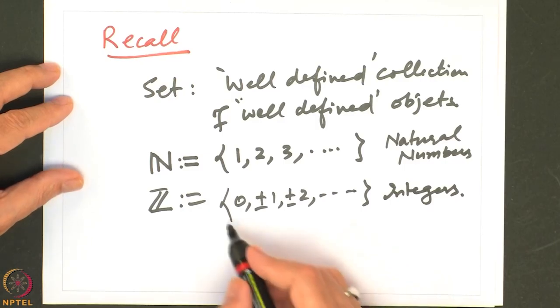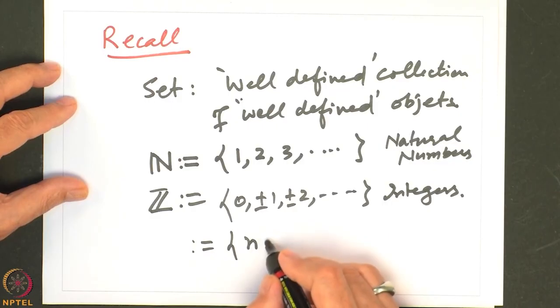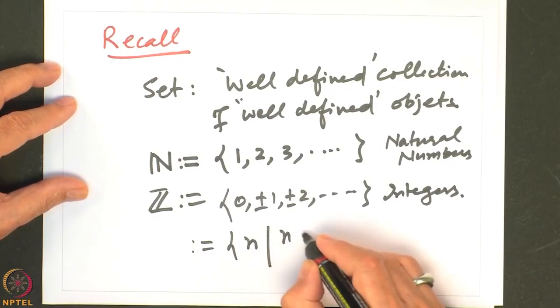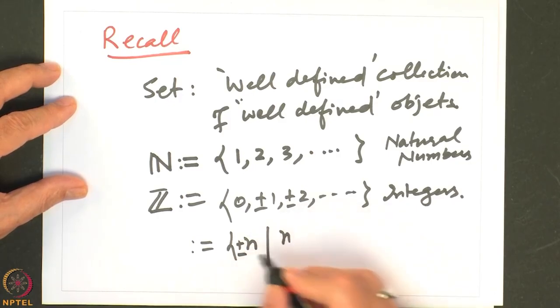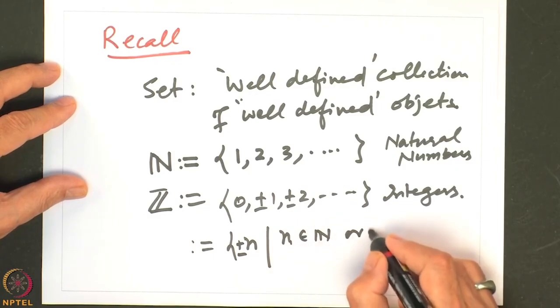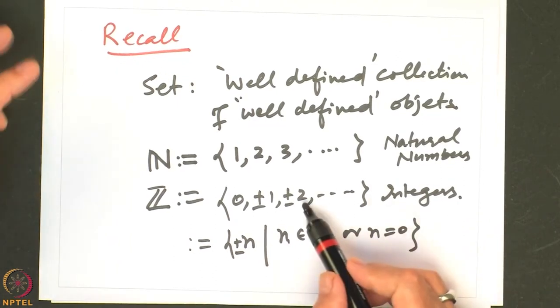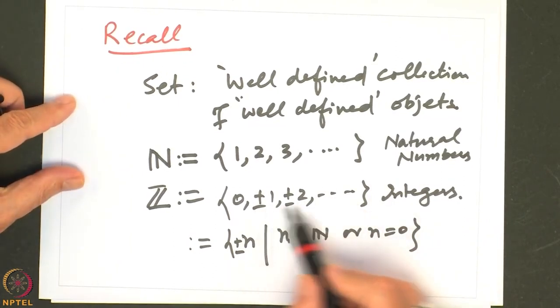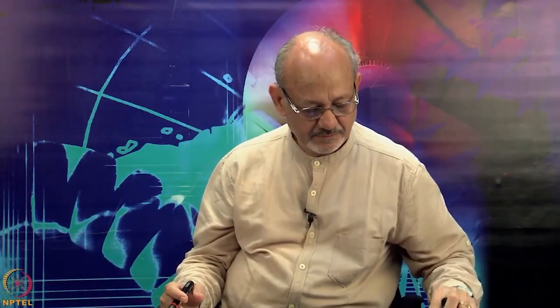One could also write the set of integers as {±n, where n is a natural number, or n could be equal to 0}. This could be another way of writing the integers. The first is called the explicit way of writing and the second is writing by a rule. Let me give you another example of describing a set by the rule method.